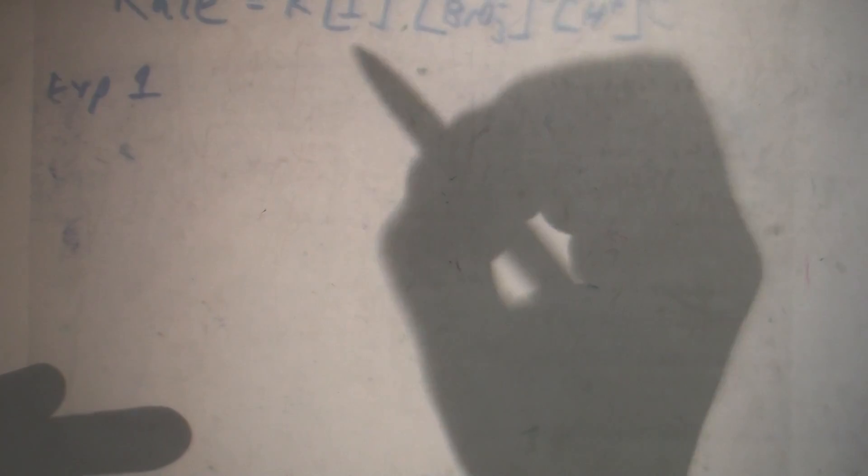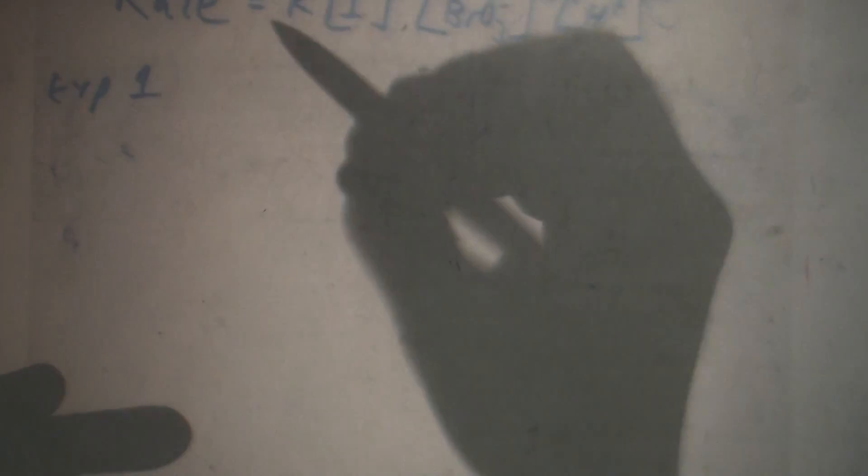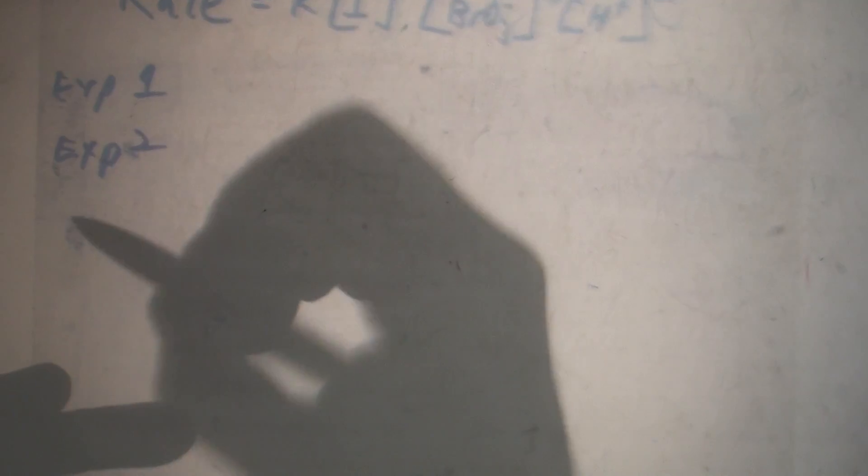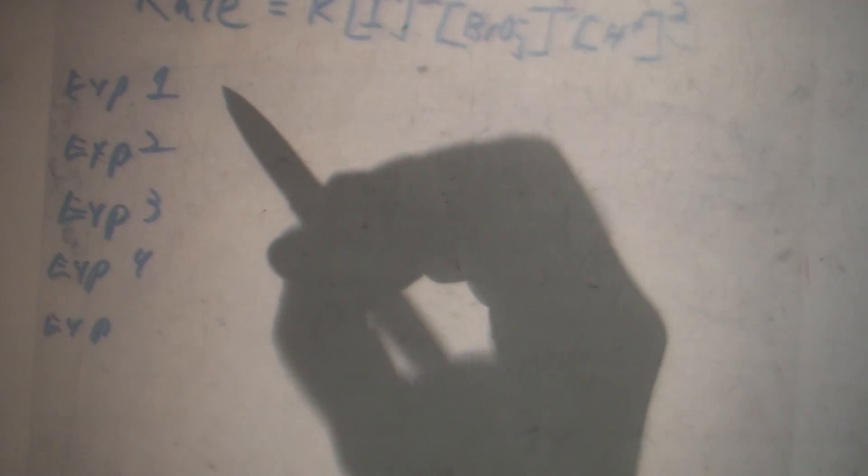So now go through all the experiments. Plug in everything, solve for k. For every single one, solve for k. For all eight. And then average them together. Okay? So you're going to plug in your rate, your concentrations and then average them all together. Okay? But stick with what you have. And then I'll hopefully tell you the real answer to this.